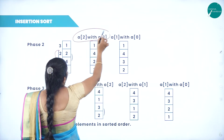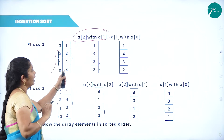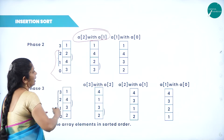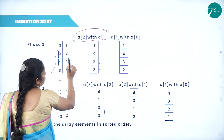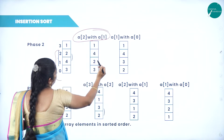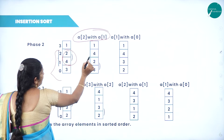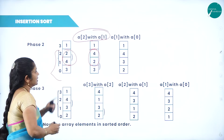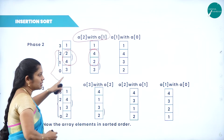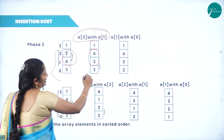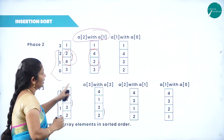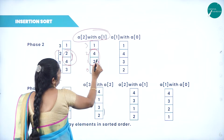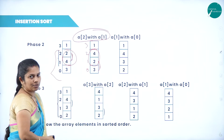The comparison takes place between A of 2 and A of 1. If A of 2 is less than A of 1, swapping takes place. The array becomes 1, 4, 2, 3. After swapping, 2 comes to position 1 and 4 moves to position 2. Next, the comparison takes place again between A of 1 and A of 0. Between these two numbers, swapping will take place.